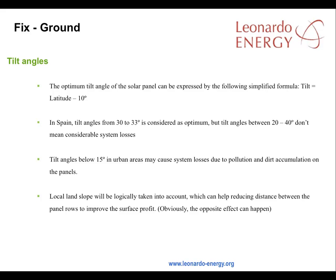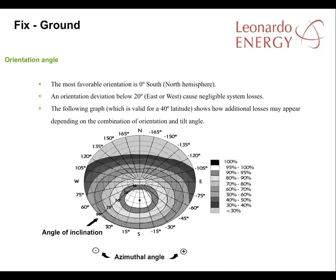Where the panel is installed on a southern facing slope, the slope can be used to reduce the distance needed between panel rows. In the northern hemisphere, the most favorable orientation is 0 degrees south. However, an orientation deviation of less than 20 degrees east or west will cause negligible system losses.